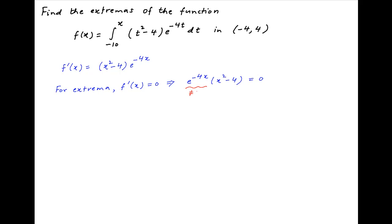Now, e raised to the power of minus 4x is never equal to 0, and therefore x squared minus 4 has to be 0. In other words, x is equal to plus or minus 2.